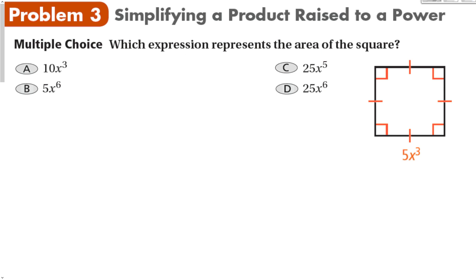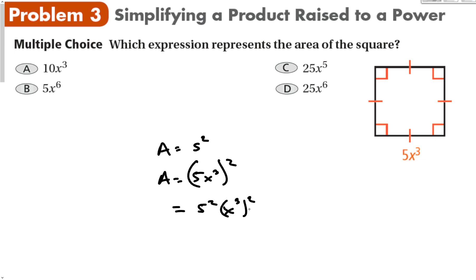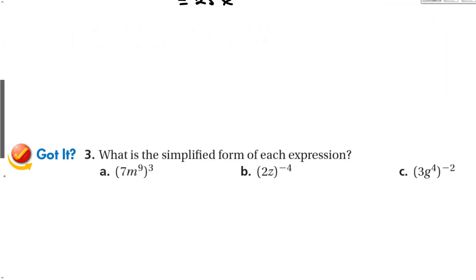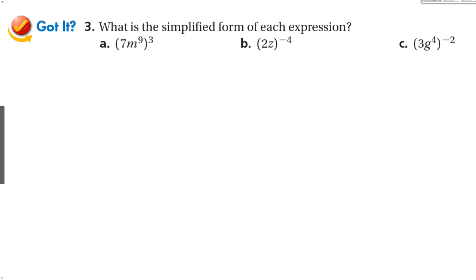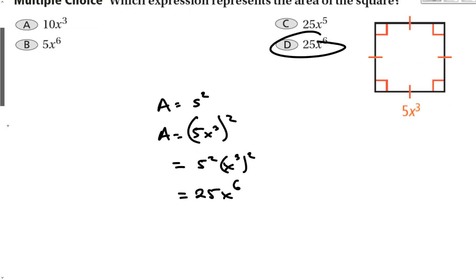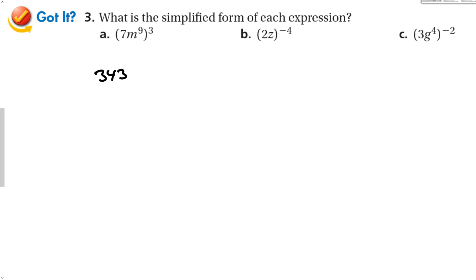Which expression represents the area of a square? The formula for area of a square is the side squared. So the area is (5x to the 3rd) squared, which equals 5 squared times x to the 3rd squared, giving 25x to the 6th — power to a power, multiply. So the answer is D. And for another example, raise both factors to the 3rd power: 7 to the 3rd is 343, and m to the 27th power.